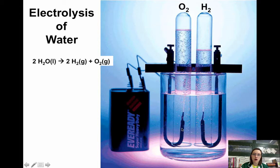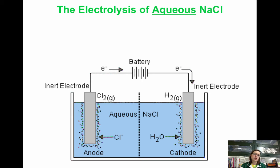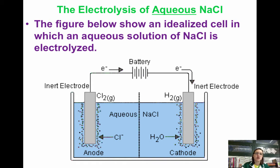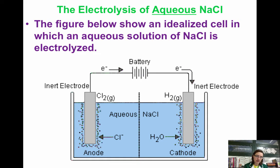You have an electrode in the water and you create oxygen gas and hydrogen gas. Now we're going to look at the electrolysis of aqueous NaCl — so now instead of having molten, we have aqueous NaCl. When water is present in an aqueous solution of NaCl, we have to figure out whether the ions that are reacting are the ions from the ionic compound or the water.